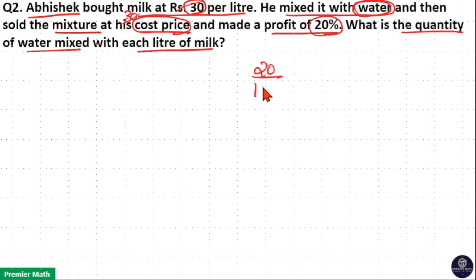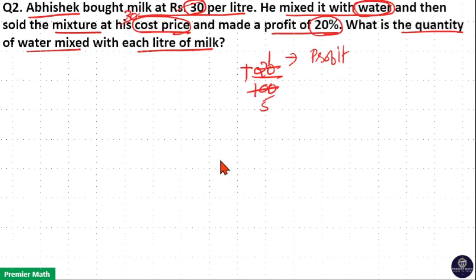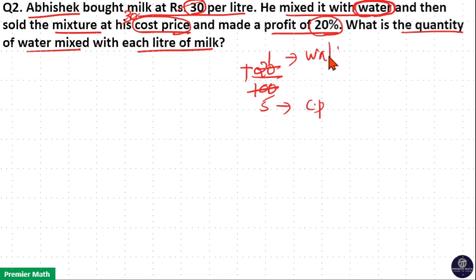Now, 20% means 20/100 profit, which is plus 1 by 5. This means 1 part is the profit generated and 5 parts is the cost price. This plus 1 part is the profit, meaning this profit comes from the water amount. So this 1 part is the water quantity, and 5 parts is the milk quantity.